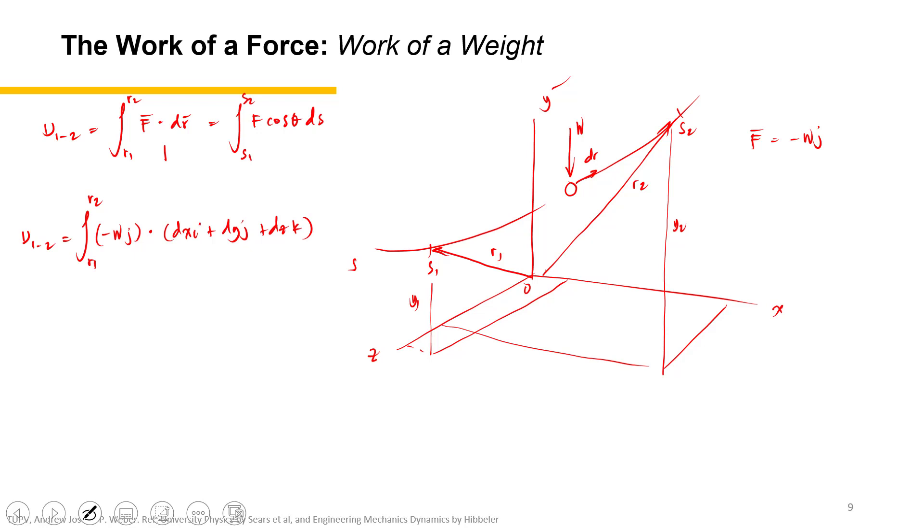And of course for the dr, that would be dx i plus dy j plus dz k. Okay, so that product of i and j equals zero. The product of any unit vectors that are perpendicular to each other is equal to zero. It would be i dot j zero, j dot k zero, k dot i zero. So for i dot i, that would be one; j dot j equals one; and k dot k equals one.